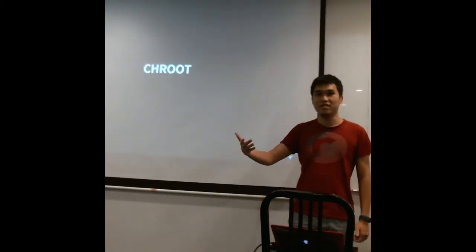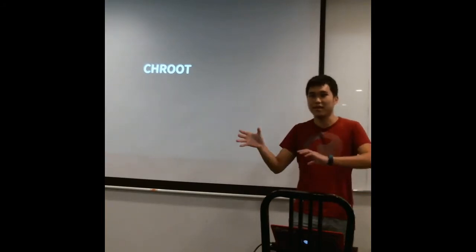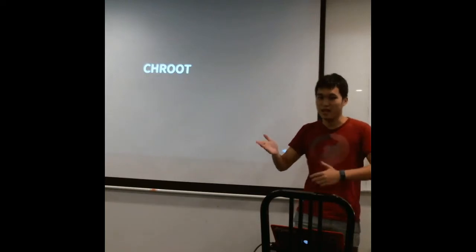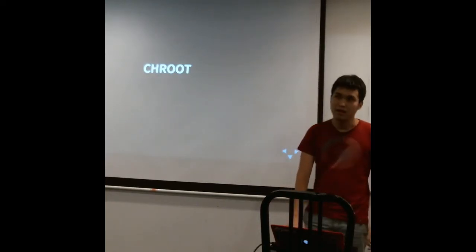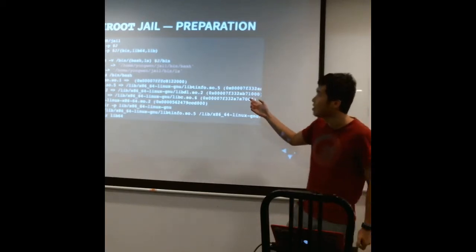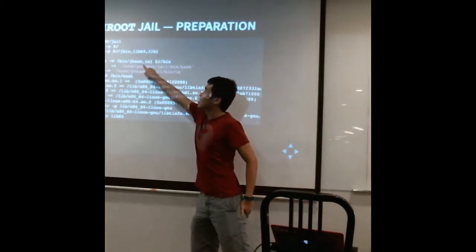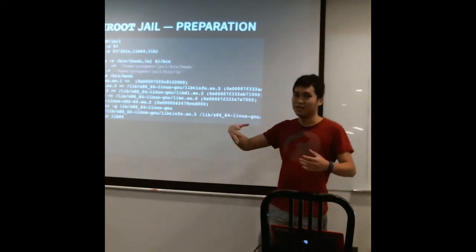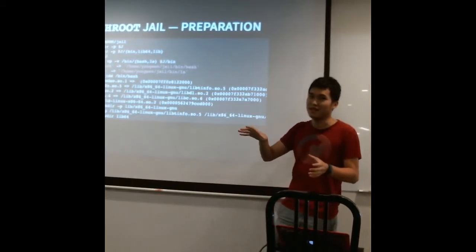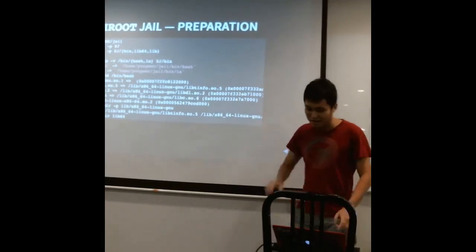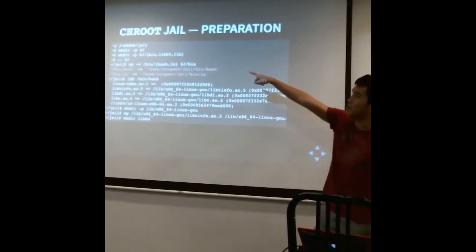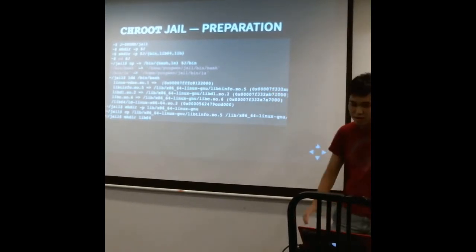chroot basically changes — you can chroot a process and then the process will think your root directory is somewhere else instead of your actual root. So let me show you an example. Before you can even run chroot, you need to prepare a bunch of stuff. For example, I want to run bash and the ls command inside a chroot jail. To do that, I need to copy the bash binary and all the dependent libraries into a jail directory, which I've created at the top, which is /home/jail.